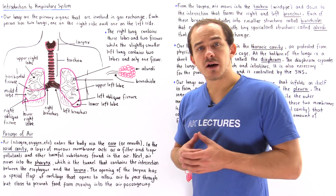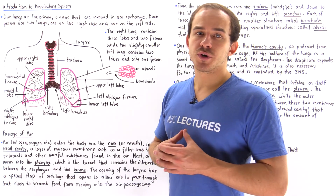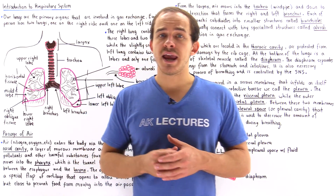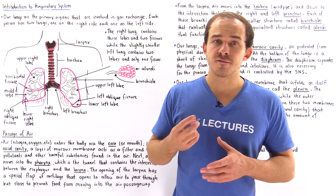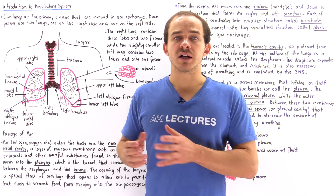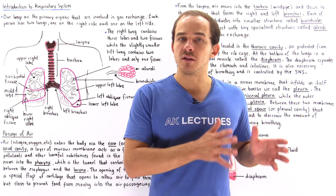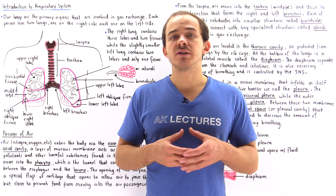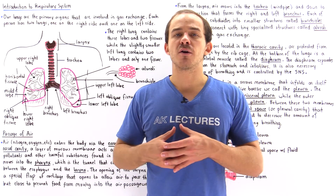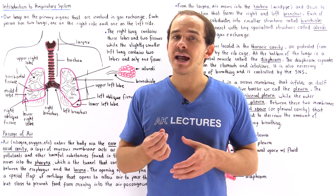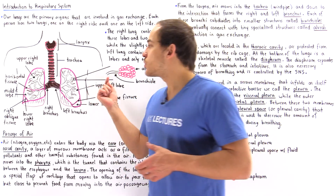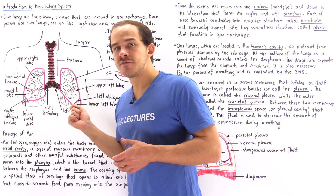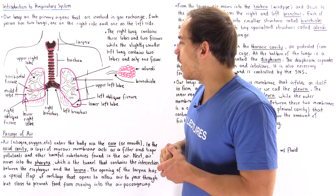The primary organ of the respiratory system are the lungs, and each person contains two different lungs. We have a right lung and we have a left lung. These lungs are found in the chest portion of our body, and that is called the thorax. So within our thoracic cavity, we have our two lungs.